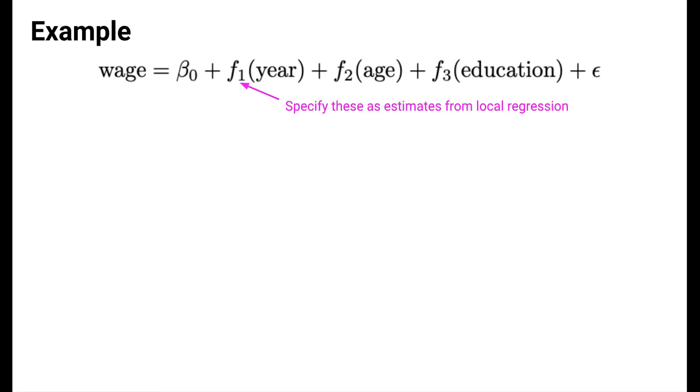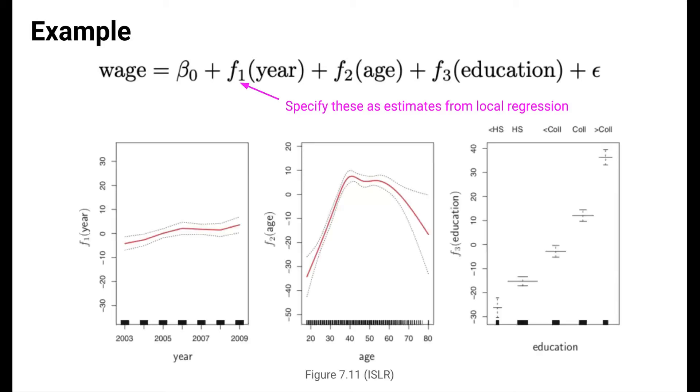Statistical software that fits GAMs needs a little more guidance than this though. We need to state the form that these f functions should take. For example, we'll say that these functions should take the form of estimates from local regression. When we do that, statistical software is able to fit the GAM model, and we get output that looks like this below. Each of these plots shows the f function estimated for the three predictor variables in our model.